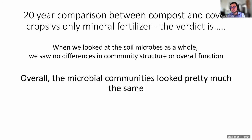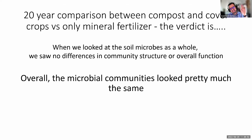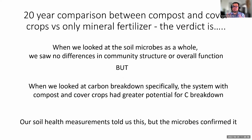We knew there were differences between these plots, so we thought there's probably a difference in the microbial community as well, given that microbes power a lot of these indicators. So let's look at how it changed. In that 20-year comparison between a system with compost and cover crops versus just mineral fertilizer, the official result was that when we looked at the soil microbes as a whole, we saw no differences in community structure or overall function. Translated: after 20 years, the microbial communities between the two systems looked pretty much the same. This is weird because we know there's a difference. Why is the metagenome not telling us the same thing?